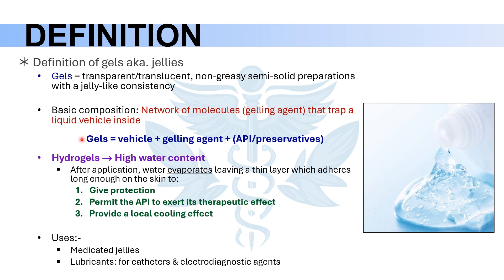Depending on the vehicle we choose to formulate our gel, we can obtain different types of gels. The most common type is the hydrogel where the vehicle is water. The vehicle can also be alcohol, oil, or most recently an emulsion in emulgels, all depending on the type of gel we want to obtain.